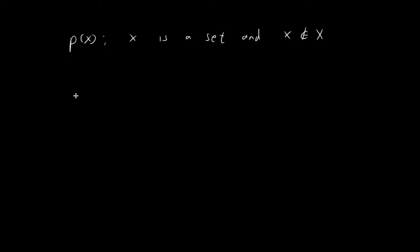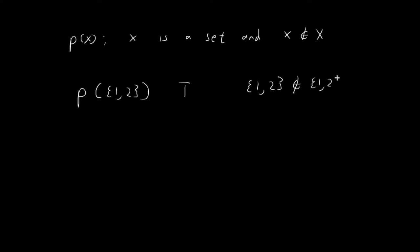For example, the statement p of the set {1, 2} is going to be true because we can see that the set {1, 2} is not an element of itself. And so that's why p of {1, 2} is actually true.